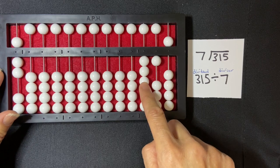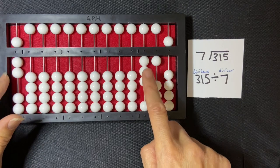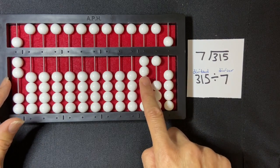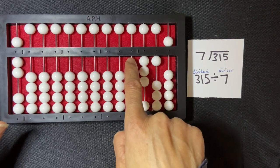So which is larger? Oh, the seven of my divisor is larger than the three of my dividend, so I don't skip a rod. I just go directly to the left of my dividend to start writing my quotient.